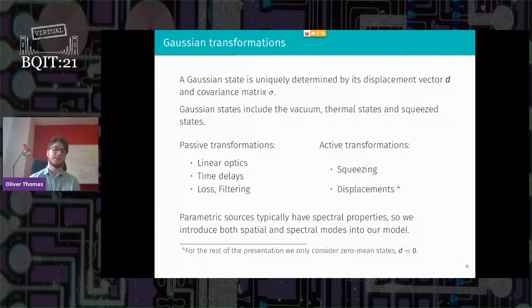There's passive transformations which I just mean linear optics, like phase shifters and beam splitters, time delays because they don't add or subtract photons. And loss and filtering which I'm calling passive but they do technically remove photons. And filtering here we consider spectral filtering, so it's like a frequency dependent loss. That's how we think of it. And then the active transformations, so single mode squeezing, two mode squeezing, and displacements. But for the rest of this talk I'm going to ignore displacements because for heralded single photons you don't want displaced states, you just want one photon.